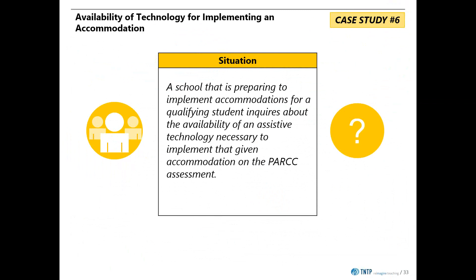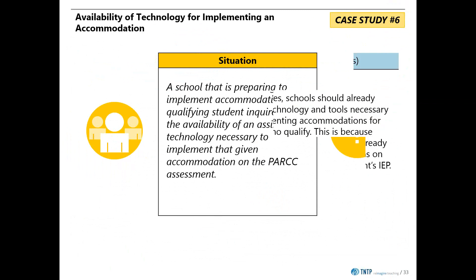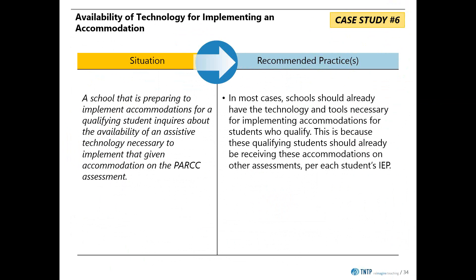This case study examines assistive technology. The answer is relatively straightforward: the PARCC should not be the first time that a qualifying student receives any accommodation. The school should already have procured the tools necessary to accommodate qualifying students on other assessments per their IEPs, as the IEP team likely previously determined that the student needed the accommodation and the related technology. For example, if a student's IEP states that the student is to use a word prediction device, that student should already be using such a device in the classroom and/or on assessments prior to PARCC administration.